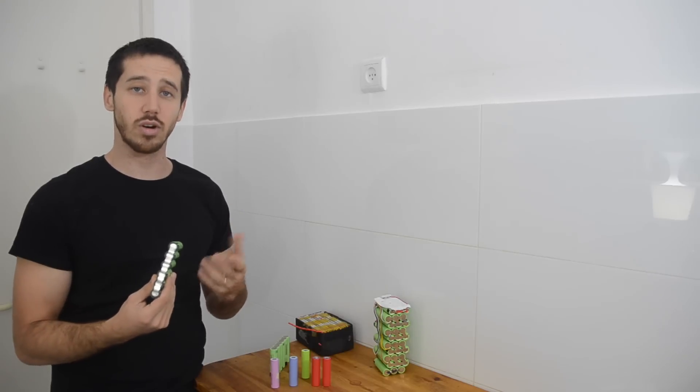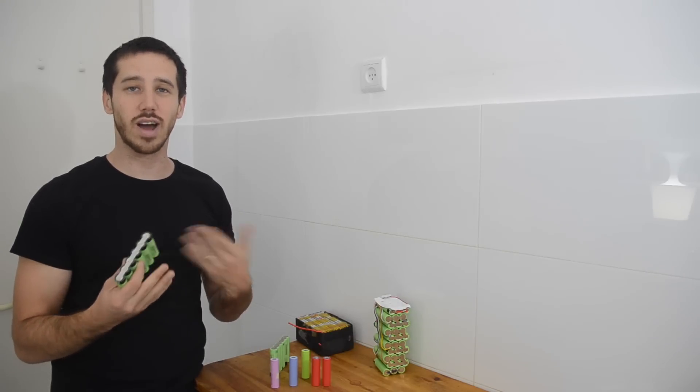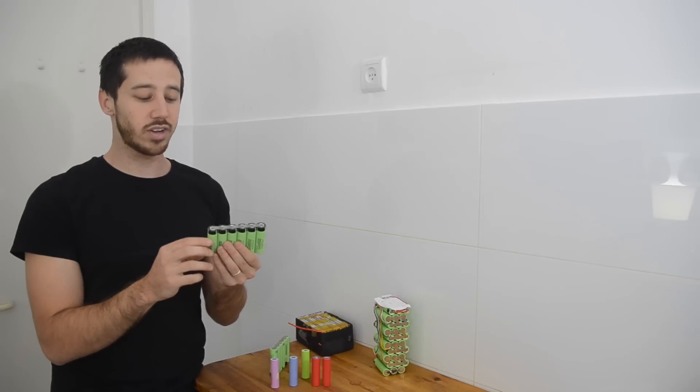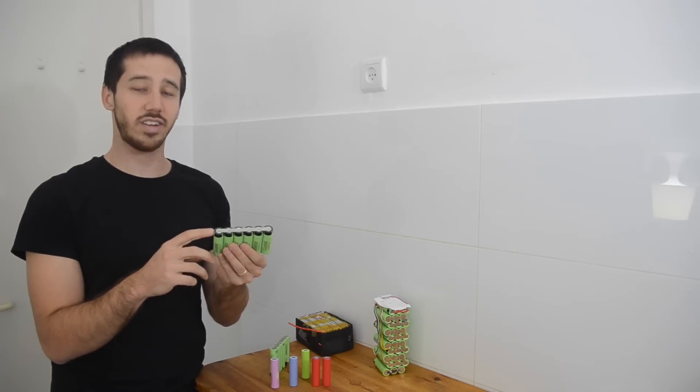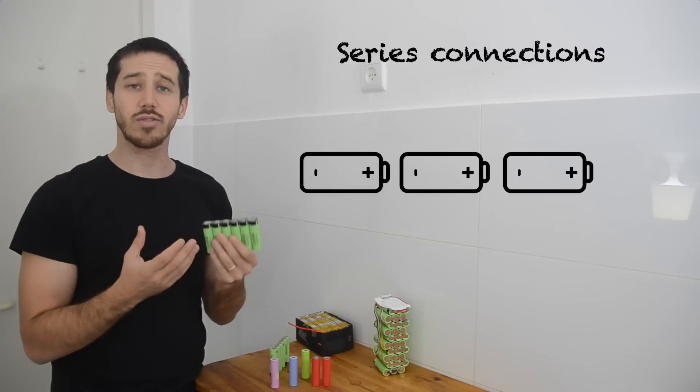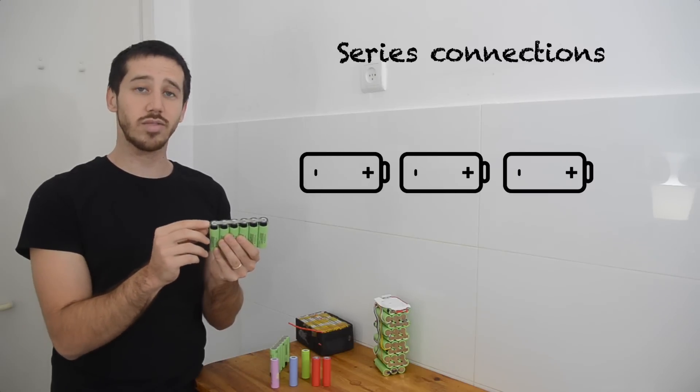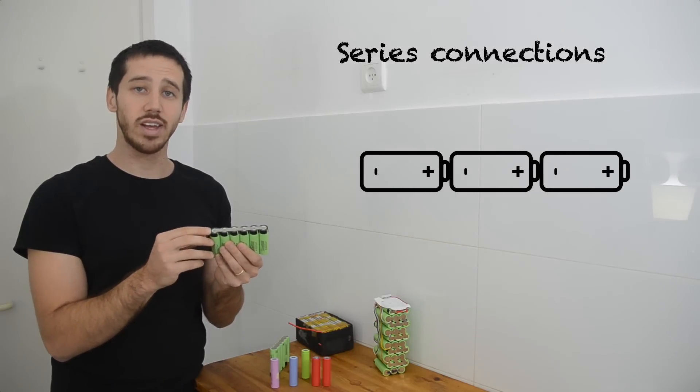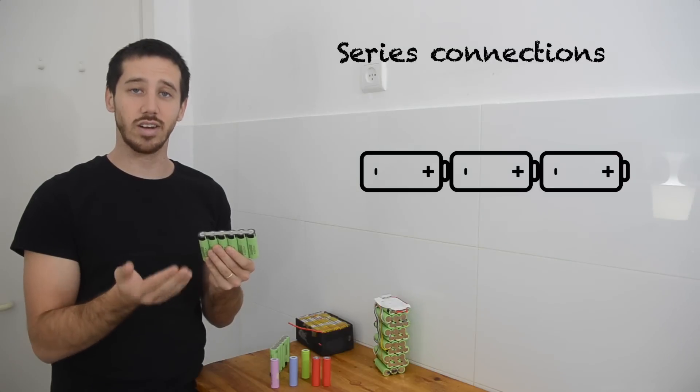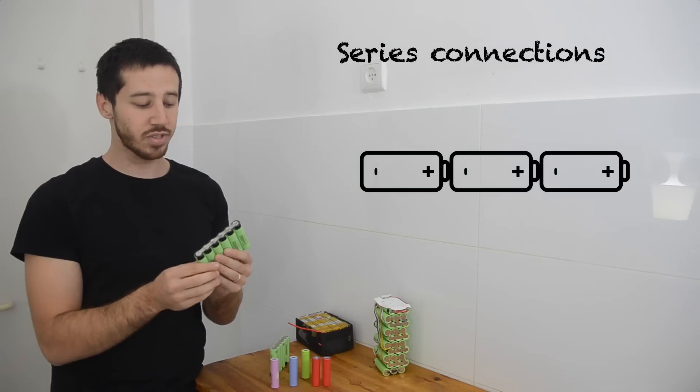Now how does a series connection work? A series connection is sort of the opposite of a parallel connection. Instead of connecting the positive ends together and then the negative ends together, for a series connection you actually take the positive end of one battery or battery cell and connect it to the negative end of the next battery or battery cell. So for example,